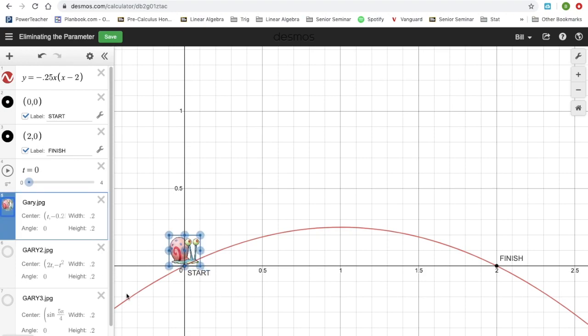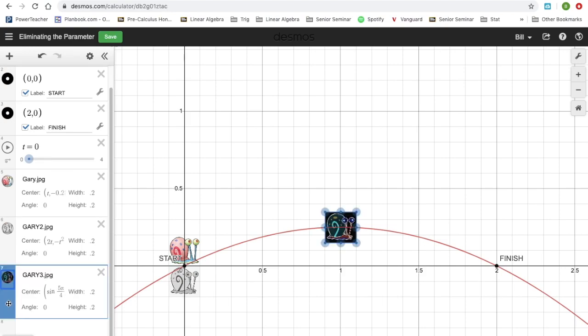So here's Gary at the starting line, and then here's a black and white version of Gary also at the starting line, and here is a bizarro world version of Gary. He's not at the finish line, he's kind of at the top of the hill. These three snails are going to race to (2,0) and they're going to need to cross the finish line, not just get there.